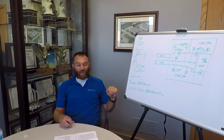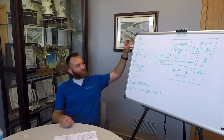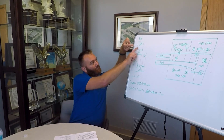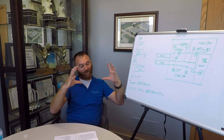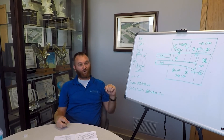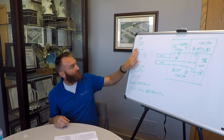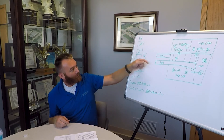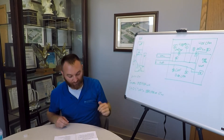Next we'll discuss static and velocity pressures. Static pressure is the pressure exerted outward on the ductwork against the sides of the ductwork, and velocity pressure is the pressure and resistance of air moving through the ductwork, in this direction as shown in the picture.